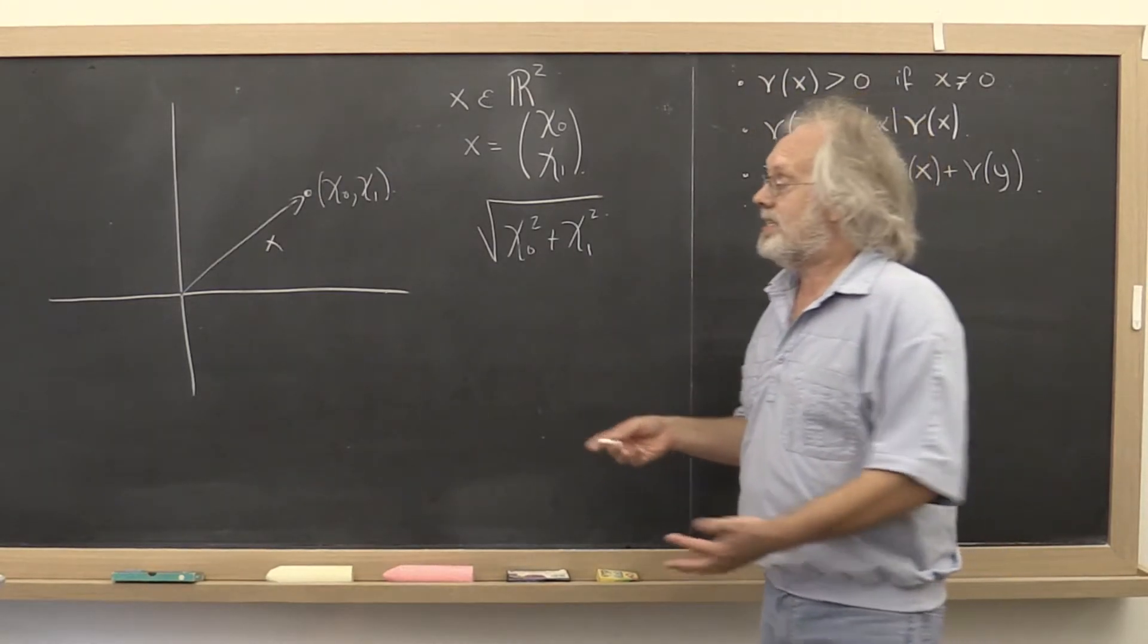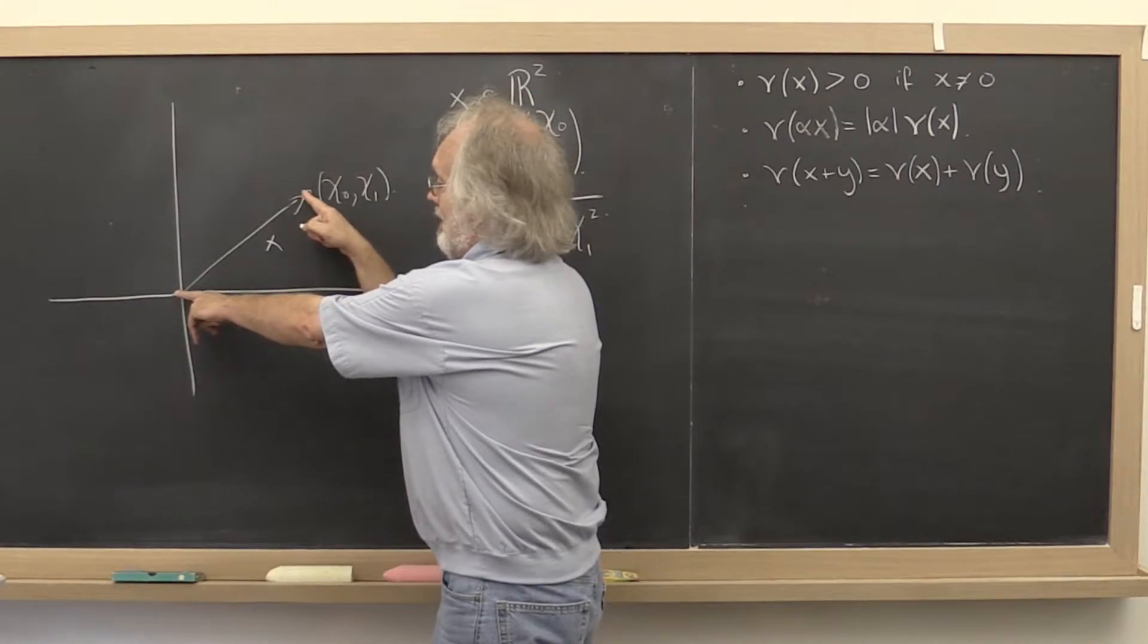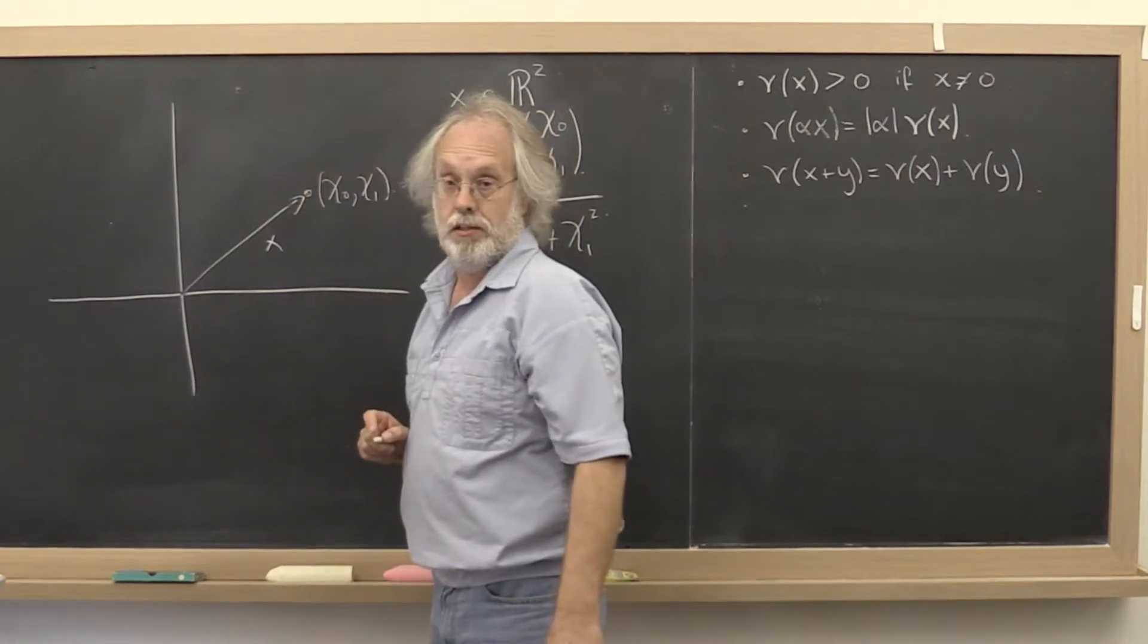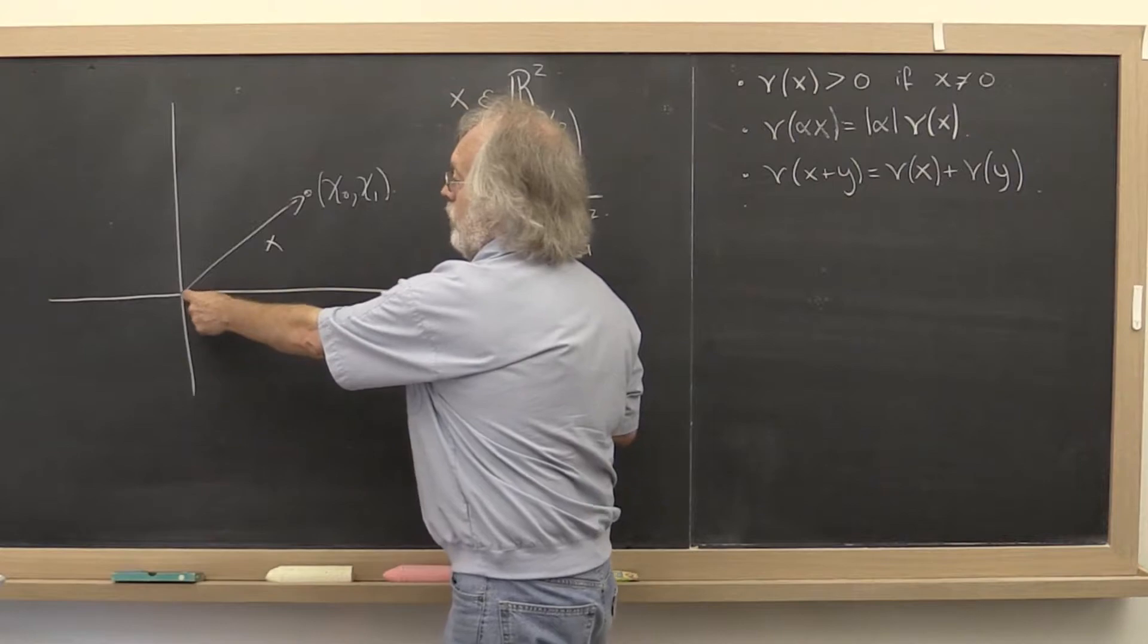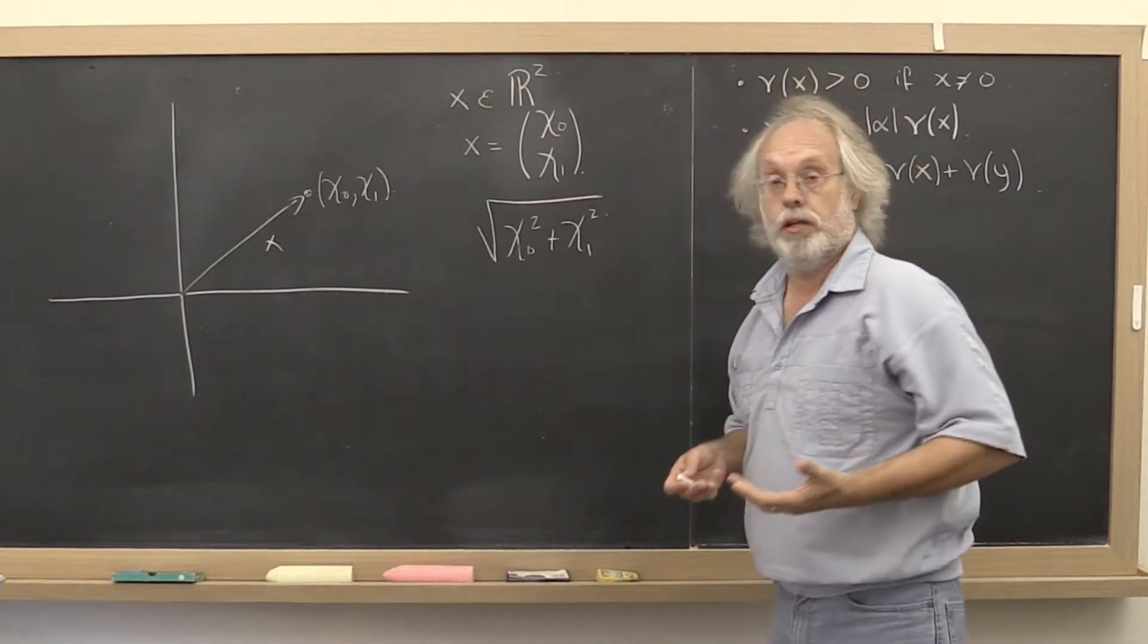So it would make sense to say that the length of this vector is the distance from the origin to that point as measured by Euclidean length.